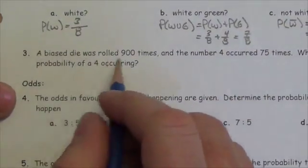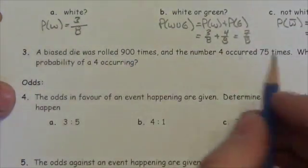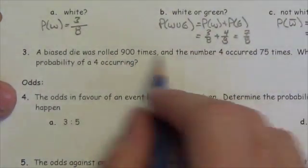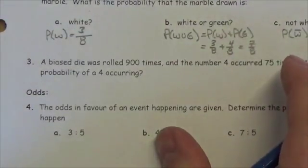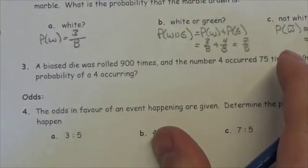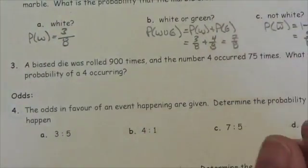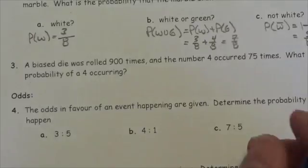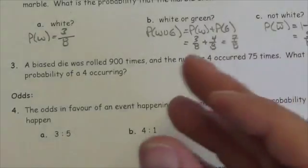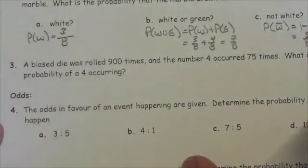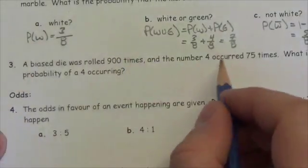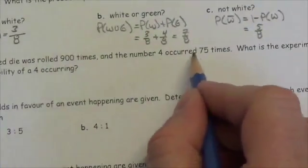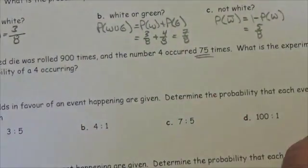This one says a biased dice was rolled 900 times. Biased means that there's something not quite right about it — it's not evenly weighted, meaning the results aren't coming out the way a regular die should; it's favoring certain numbers. It was rolled 900 times and the number 4 occurred 75 times.